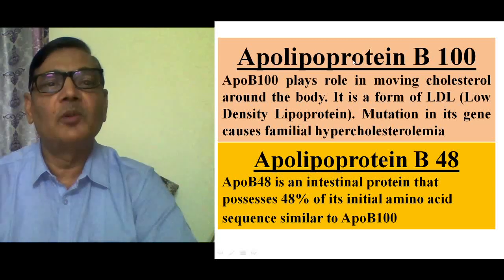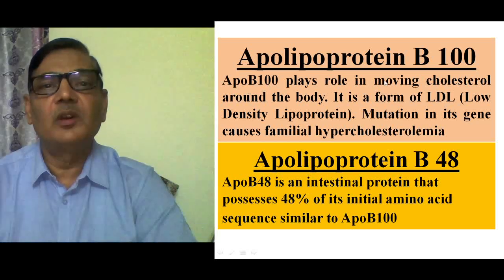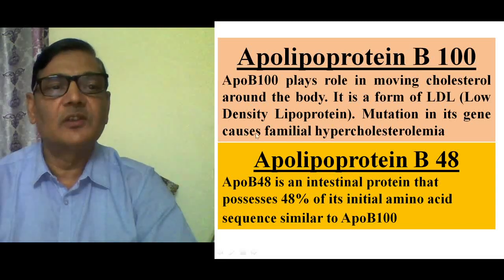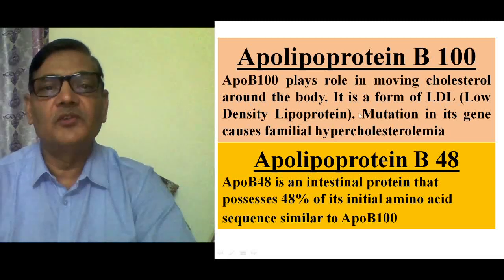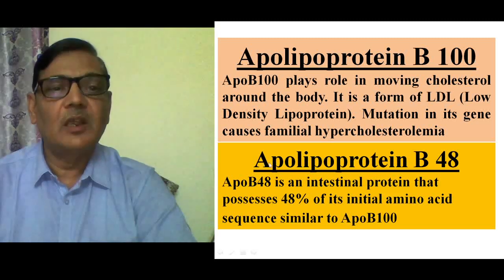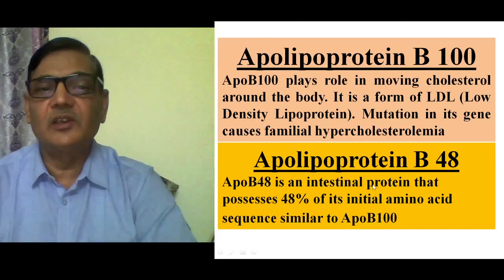We can understand this by considering a particular example. There is a protein called apolipoprotein B. One type — apolipoprotein B100 — plays a very important role in moving cholesterol around our body. It is a low-density lipoprotein (LDL) protein, and mutation in the gene coding for this protein causes familial hypercholesterolemia, meaning cholesterol levels will be very high. This protein is synthesized in the liver.